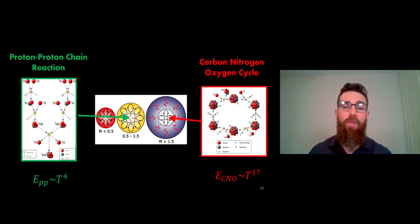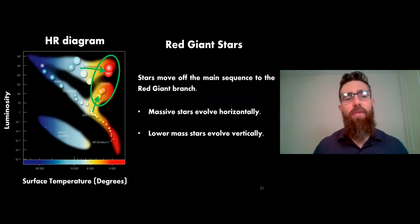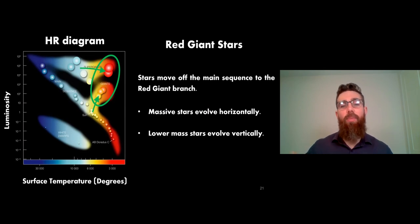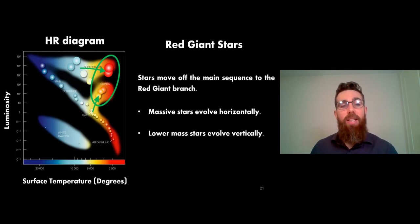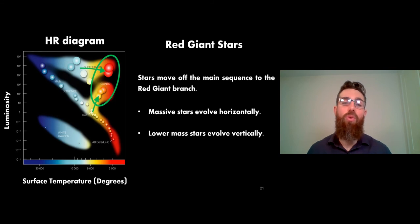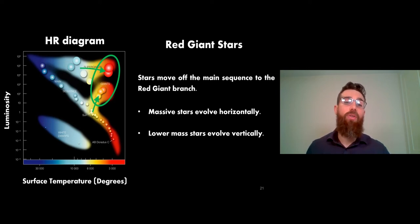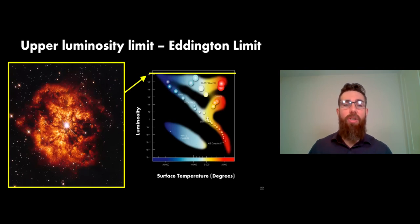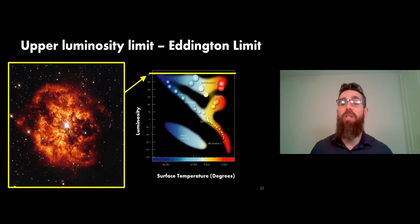Once a star finishes the main sequence and hydrogen fusion in its core, most stars go into a red giant phase, moving off the main sequence to the upper right. Solar-mass stars go almost vertically up into the red giant phase, while larger more massive stars take a more horizontal route moving to the right. Some very massive stars never actually get a red giant phase because they don't cool down enough to appear red. The larger stars don't get more luminous because they're already close to the Eddington limit.